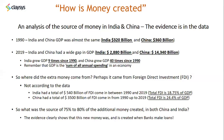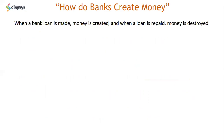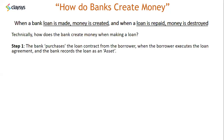The evidence clearly shows that this new money was and is created when banks make loans. When a bank loan is made, money is created, and when a loan is repaid, that money is destroyed. So the first step when a bank makes a loan is that it is purchasing a loan contract from the borrower — when the borrower executes the loan agreement and the bank records the loan as an asset.